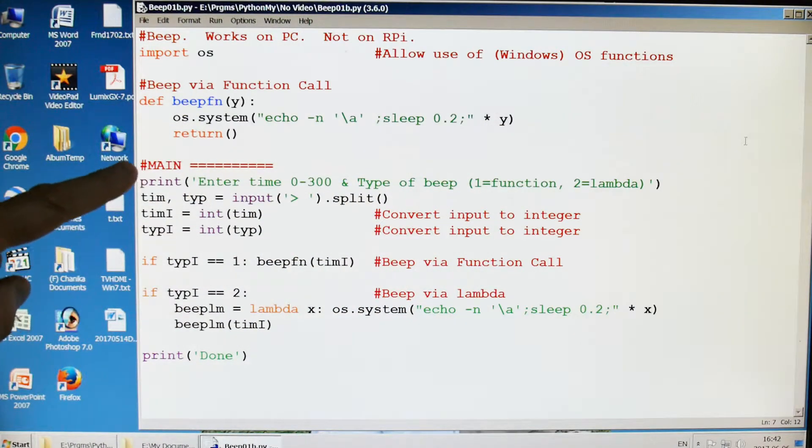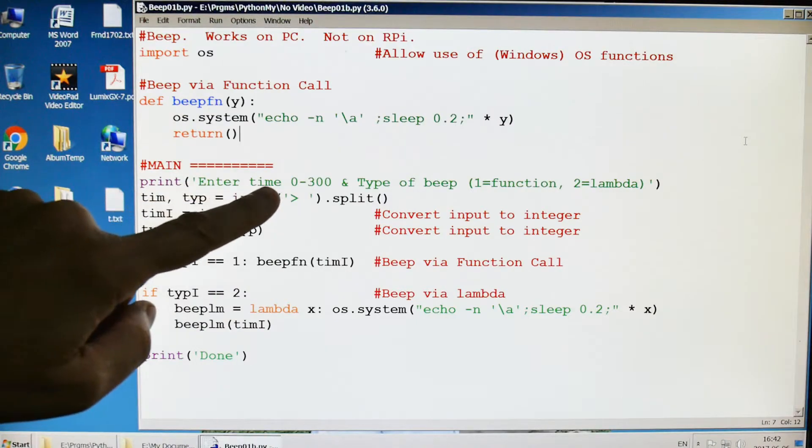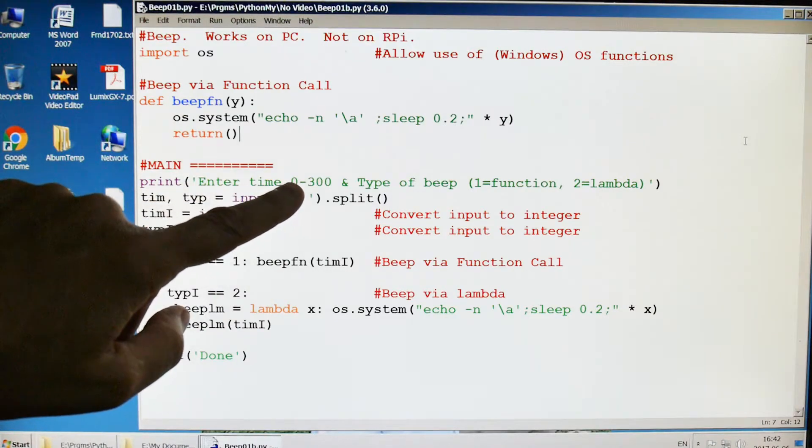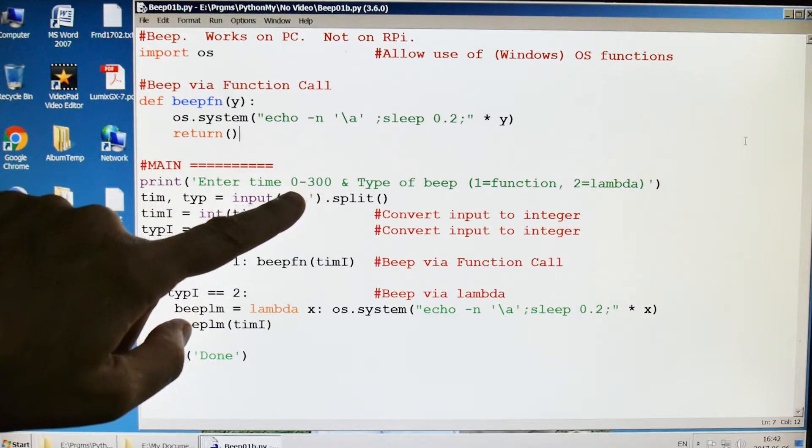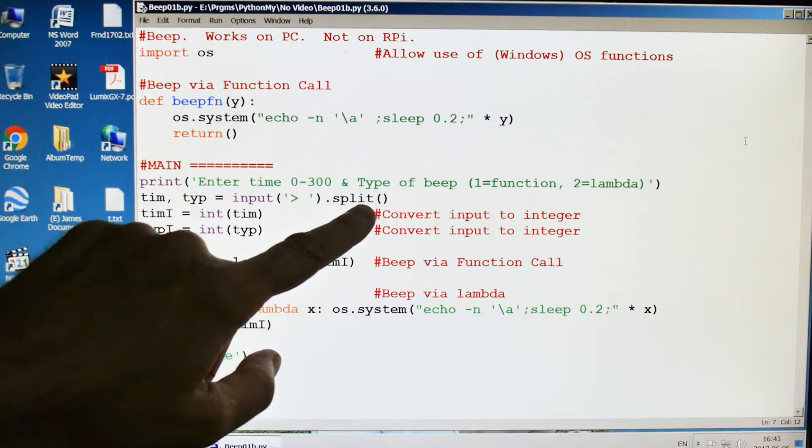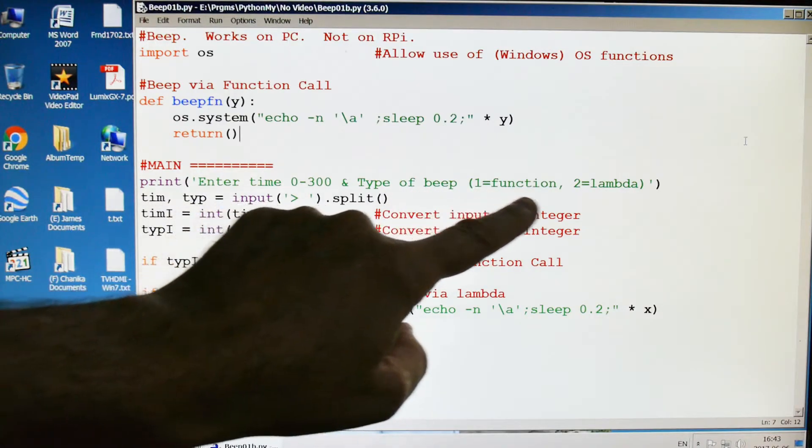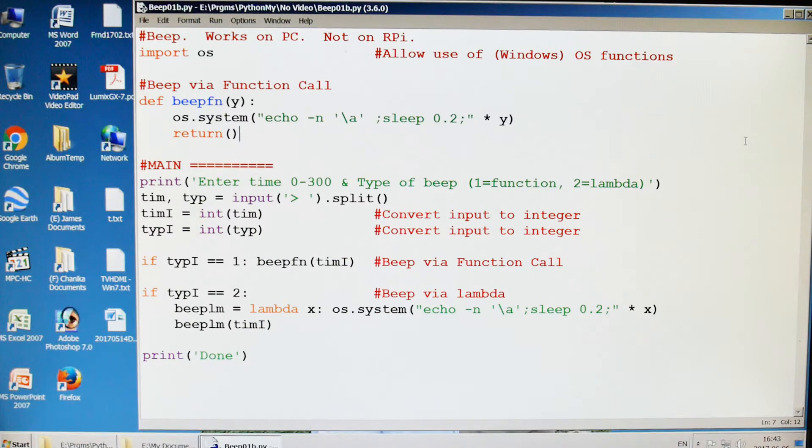Down here to the main program, we're just going to print the user instructions. Either use a time of somewhere between 0 and 300, something like that, and we're going to also ask for the type of beep. Do they want it from the function or do they want it from lambda?